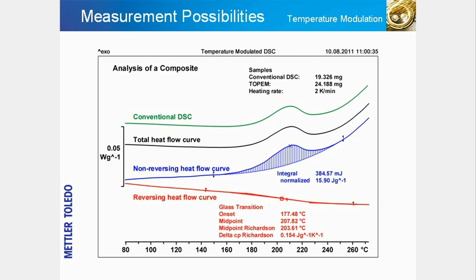In the example shown, the purpose of the analysis was to assess the quality of cure of a carbon-fiber epoxy composite. This is usually done by measuring the glass transition temperature. However, in this case, the post-curing reaction and glass transition overlap. The green conventional DSC curve shows only a single exothermic peak.